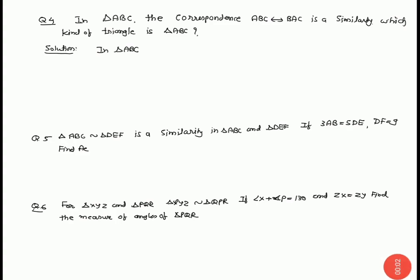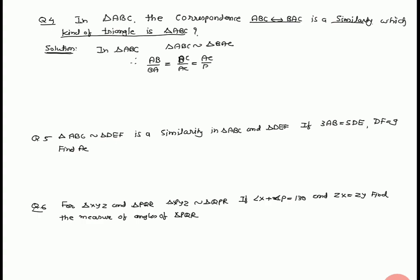Now we start exercise. Chapter 6 most important question, question number 4: In triangle ABC, the correspondence ABC to BAC is a similarity. Which kind of triangle is ABC? Now we start the solution. In triangle ABC, triangle ABC similar triangle BAC. Therefore corresponding sides are in the same proportion: AB upon BA, BC upon AC equal to AC upon BC.